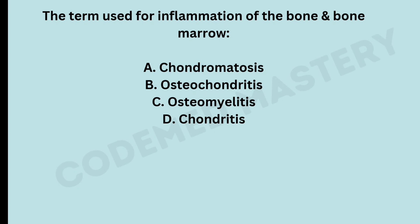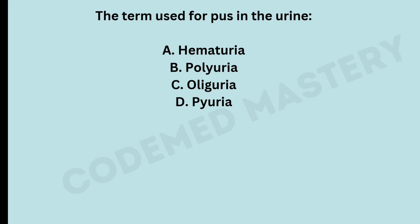The term used for inflammation of the bone and bone marrow is — option A: chondromatosis, option B: osteochondritis, option C: osteomyelitis. The right answer is option C, osteomyelitis. The term used for pus in the urine is — option A: hematuria, option B: polyuria, option C: oliguria, option D: pyuria. The right answer is option D, pyuria.